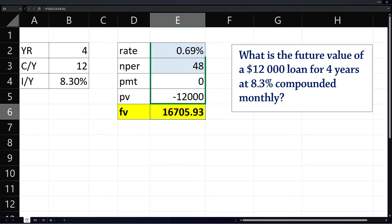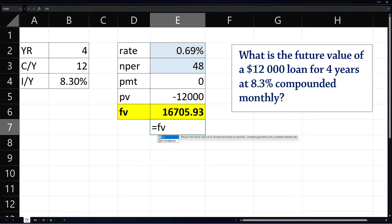Instead of selecting input values in cells, we could also type the information directly into one cell: equals FV, open bracket, periodic rate is 8.3% divided by 12, comma, number of periods is 48, comma, periodic payment is 0, comma, and we can enter the present value as negative 12,000, and then enter.